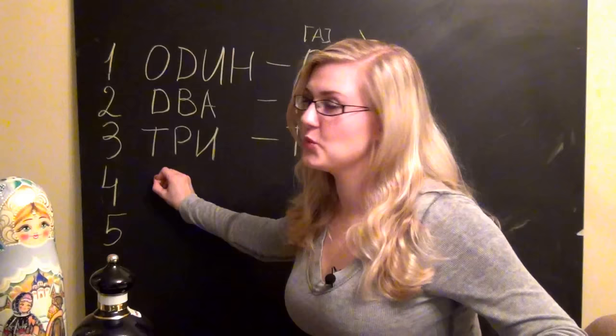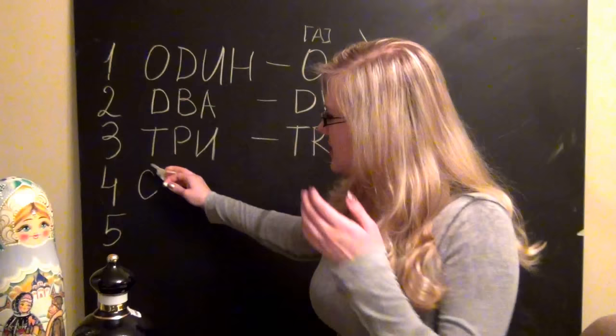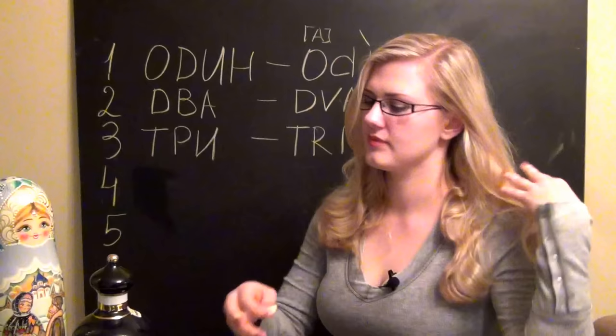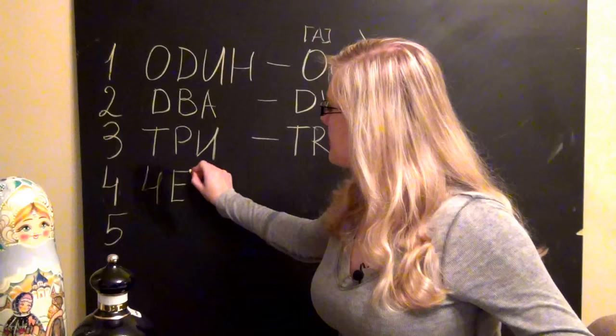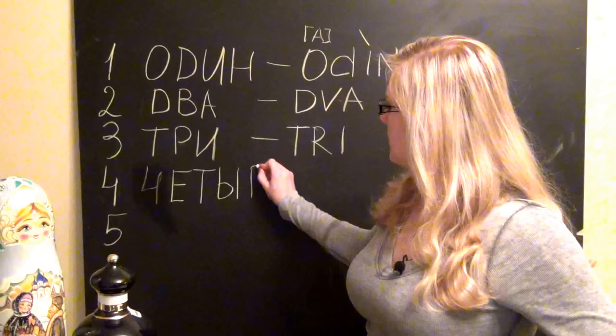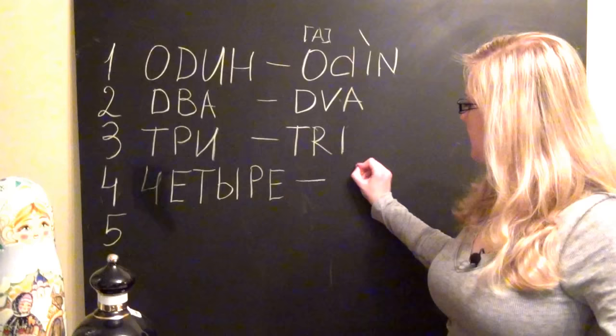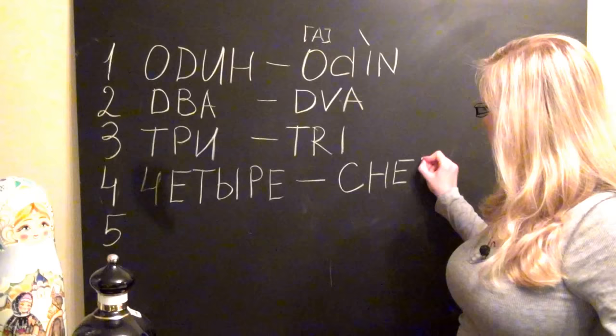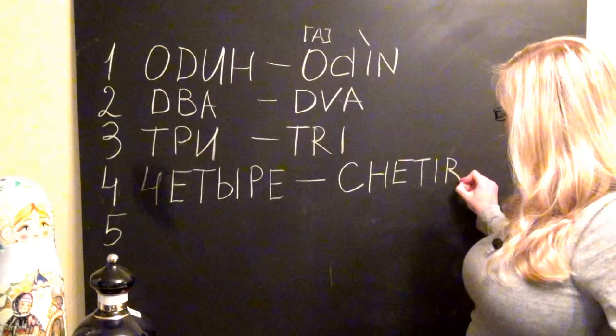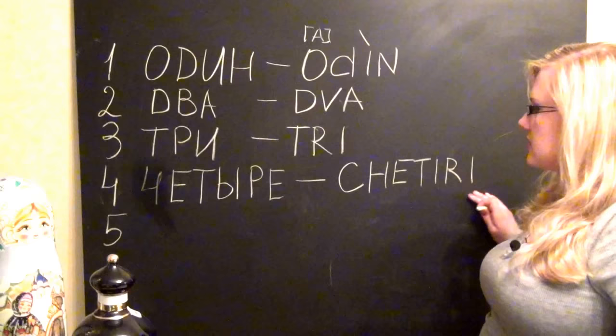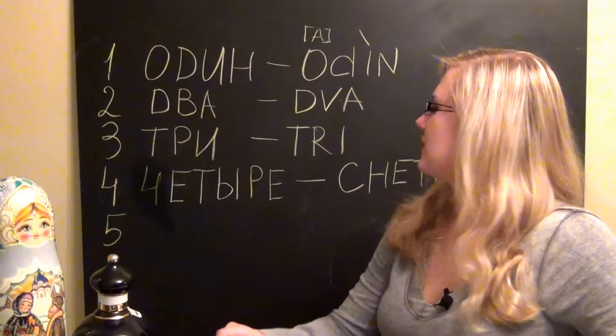Four will be четыре. It's a little bit more complicated. Let me write it first in Russian. Четыре. In translate you would write it as such. Четыре. Let's pronounce it together. Четыре. Okay.